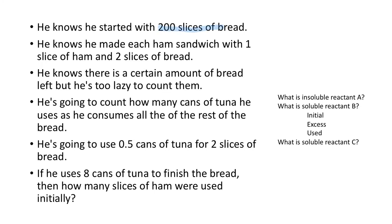He knows he started out with 200 slices of bread — that's his soluble reactant B, so he had excess slices of bread. He knows each ham sandwich uses one slice of ham and two slices of bread. He can't count the leftover bread, but he's going to count how many cans of tuna he uses as he consumes the rest of the bread — tuna is soluble reactant C. If he uses 0.5 of a can of tuna per two slices of bread, and uses eight cans of tuna to finish the bread, how many slices of ham were initially used?